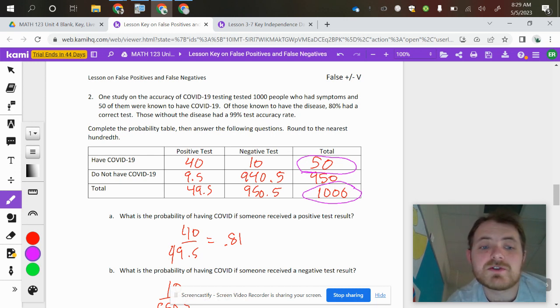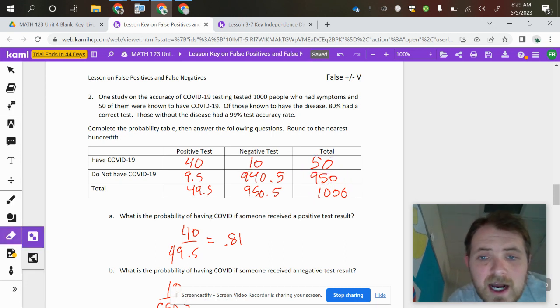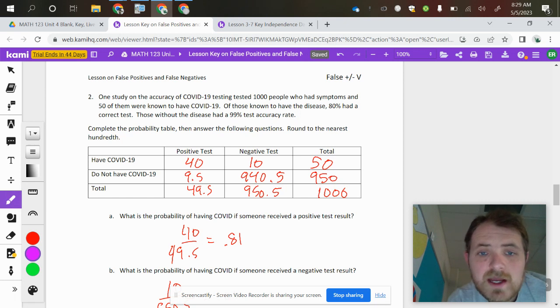Now we're looking at the actual accuracy of the tests. So it says 80% had a correct test. So I'm going to take 80% of 50, which is 40.